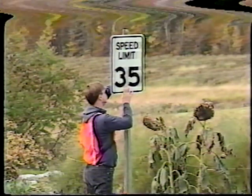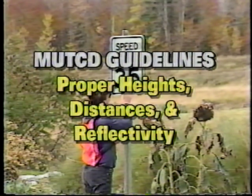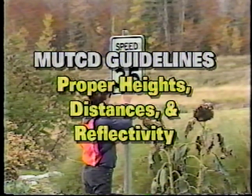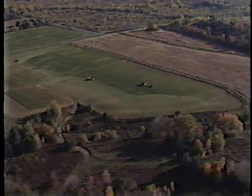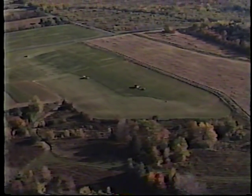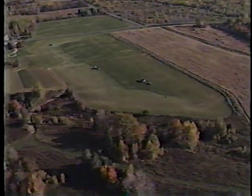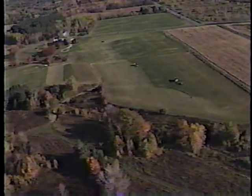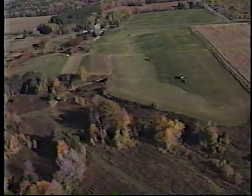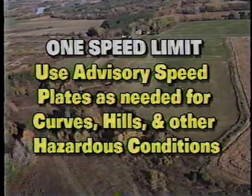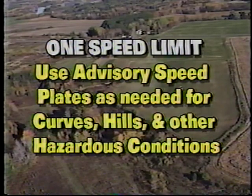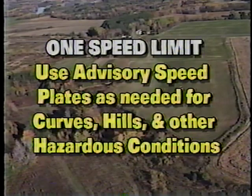Posting signs is the next step. The MUTCD has guidelines for the proper heights, distances, and reflectivity for signs to be effective. Do not use speed zones to warn motorists of hazardous conditions. On rural roads, for example, avoid posting speed limits that jump from 40 to 30 to 35 to 45 and back to 30. Rather, try to establish one speed limit and use advisory speed plates as needed for curves, hills, and other hazardous conditions.